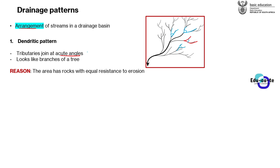The dendritic drainage pattern looks like the branches of a tree, or it resembles the branches of a tree. On this practical diagram, you can see the dendritic pattern of streams in a river system, and it definitely looks like branches of a tree because branches join together in this same pattern.